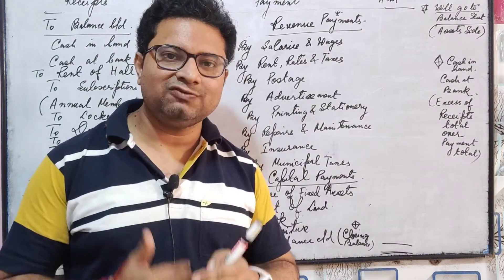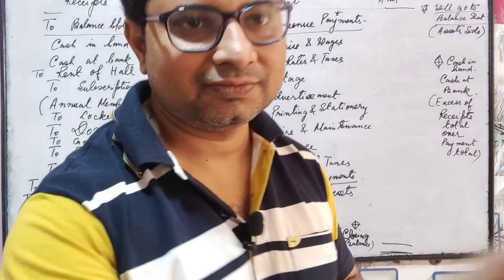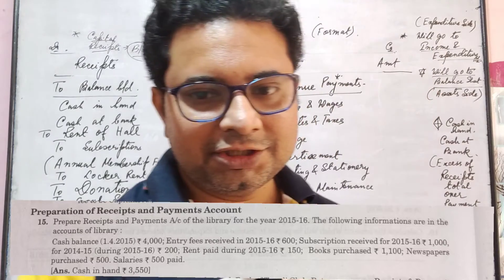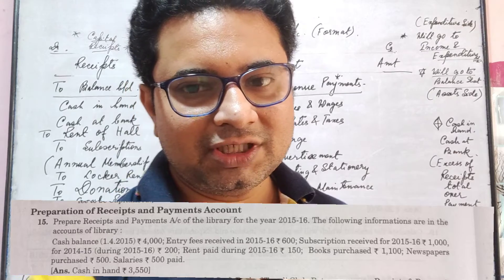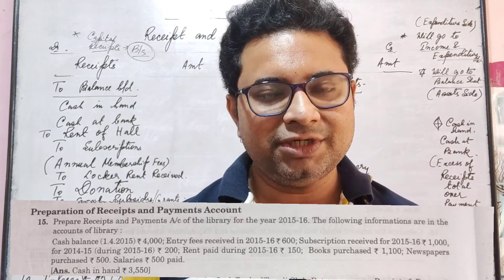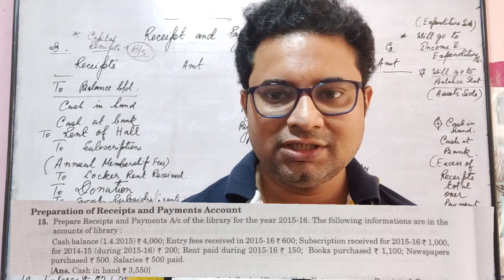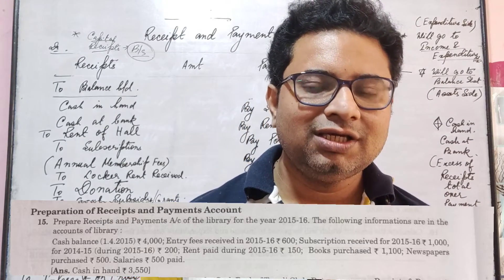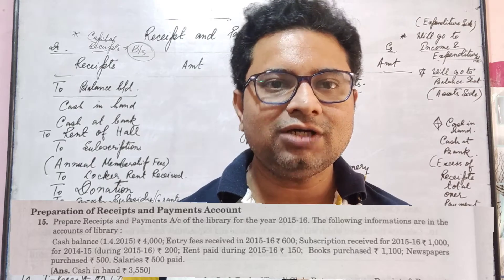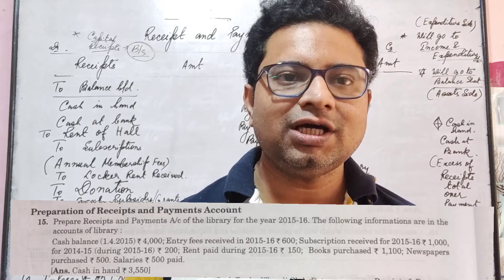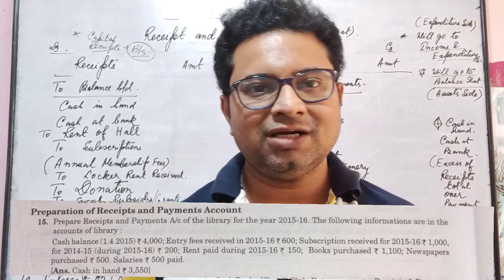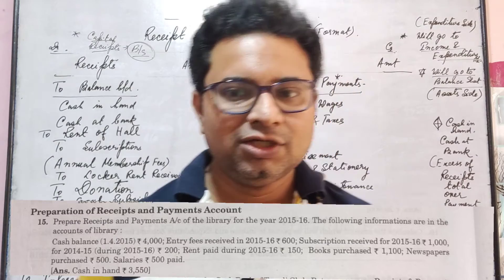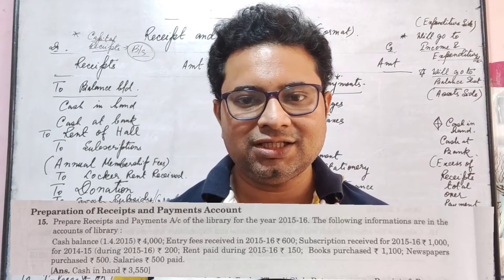The video explanation is now clear. We will now focus on how to solve questions. We will read question number 15 regarding preparation of receipts and payment account — prepare the receipts and payment account of the library, a non-profit organization, for the year 2015-16. Cash balance as on 1st April 2015 is Rs. 4,000.